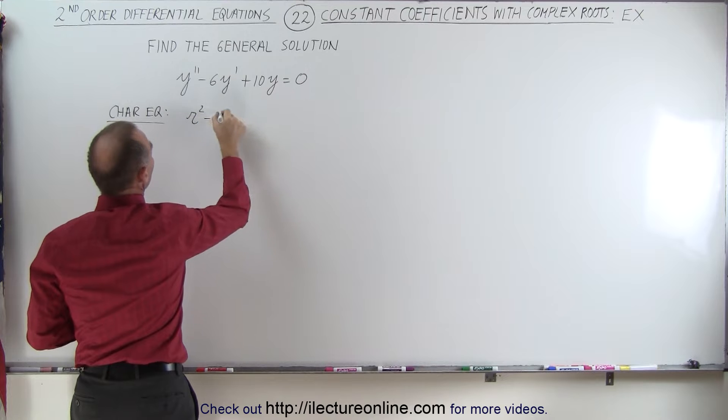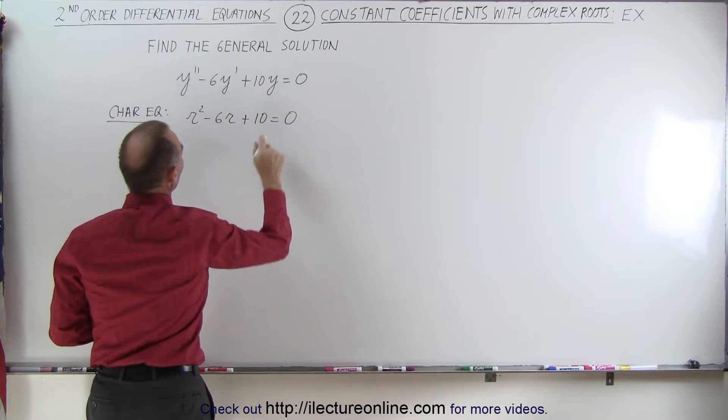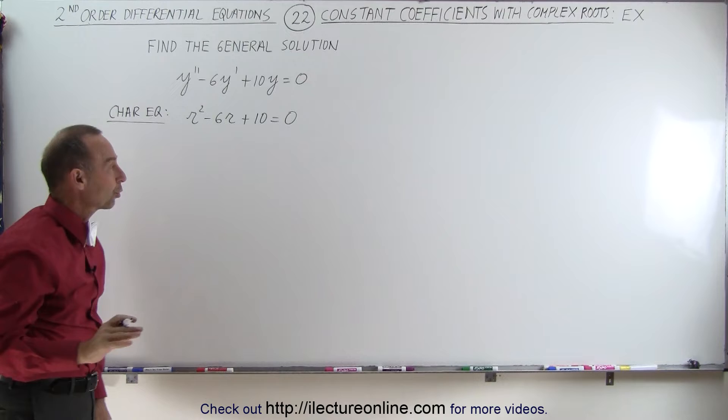R squared minus 6R plus 10 equals 0. We'll solve this just like a quadratic equation.